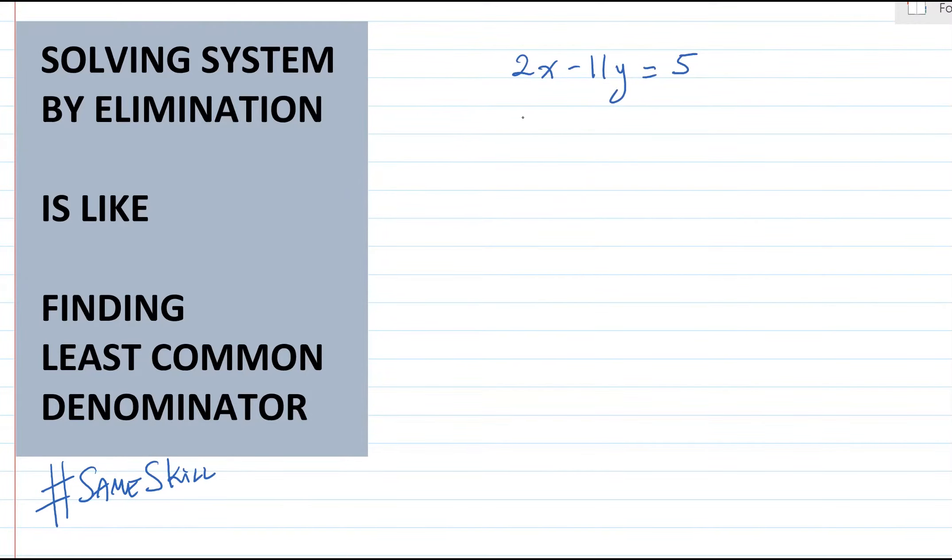Let's say we have these equations. And let's say we want to eliminate x. We see 2x and 4x. We want them to become opposites of each other.